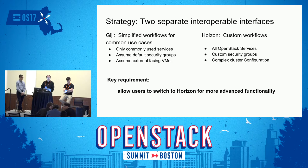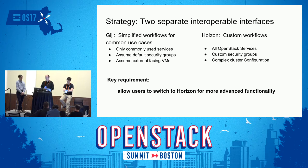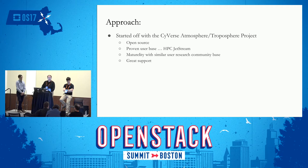We are also providing services that are not found in Horizon, such as Cloud Dataverse, which we have built on top of OpenStack. One of our basic requirements is to allow users to switch between Horizon and GG. As a starting point for GG, we chose to fork Cyverse's Atmosphere-Troposphere project.